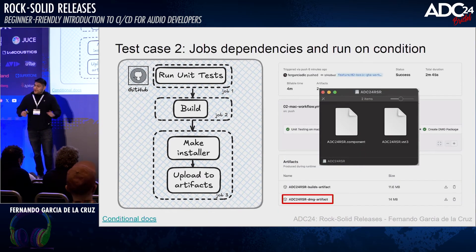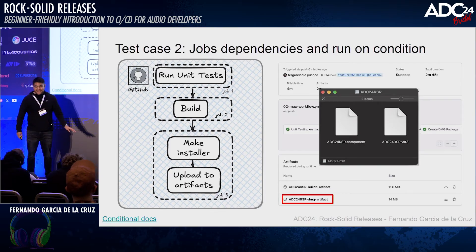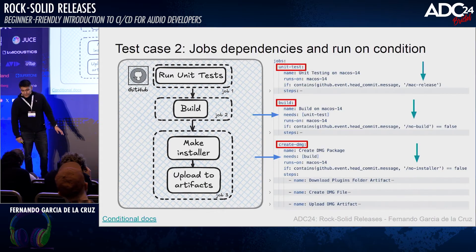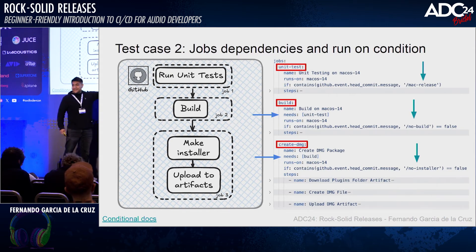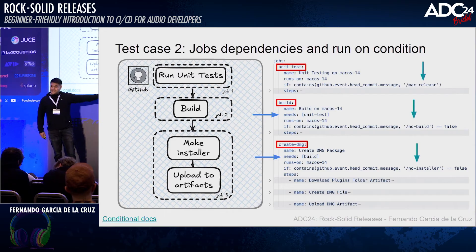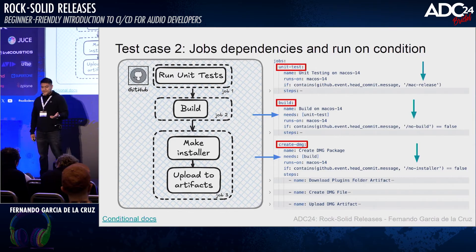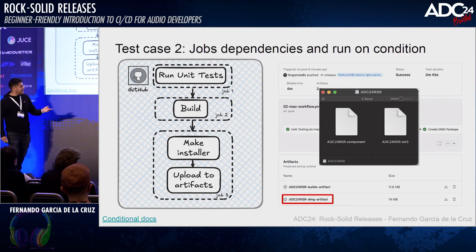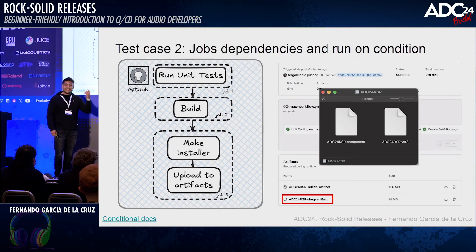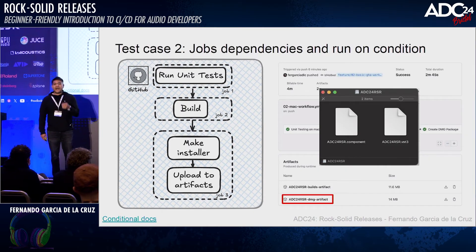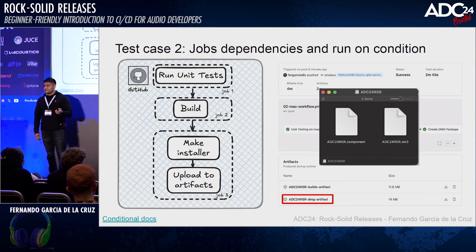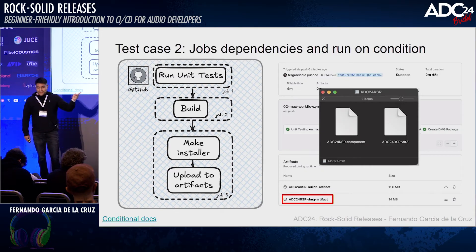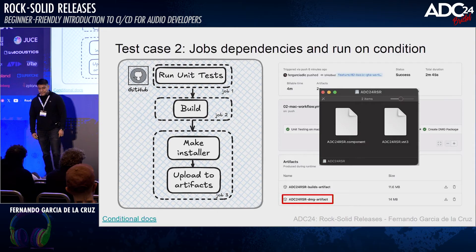If everything goes well, you can create an installer — for example, on Mac, create a DMG format. At the end you will have the artifact containing that DMG file. So you now have an installer that contains both compiled versions of the plugin: the AU and the VST3. This is super, super convenient.